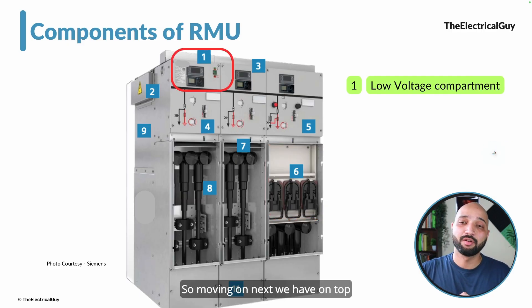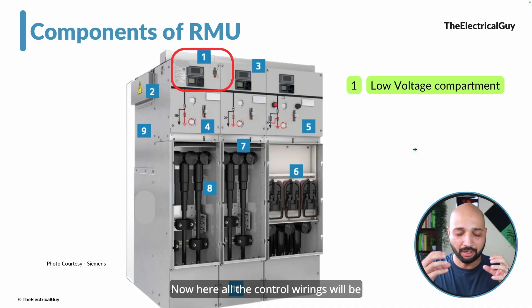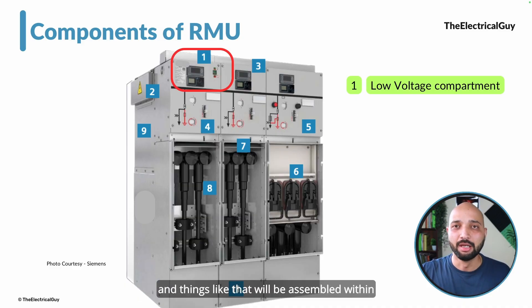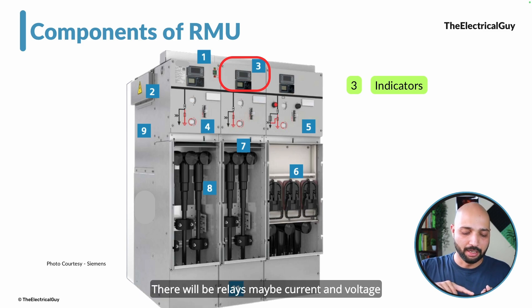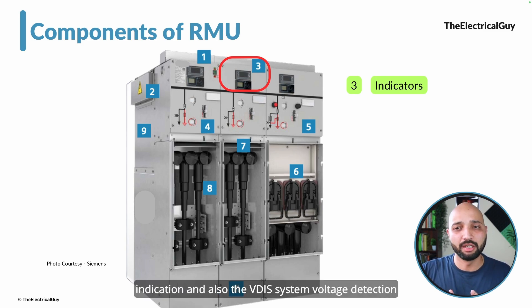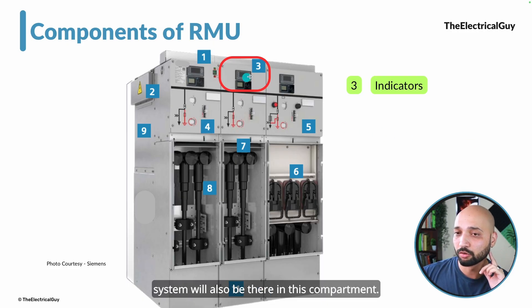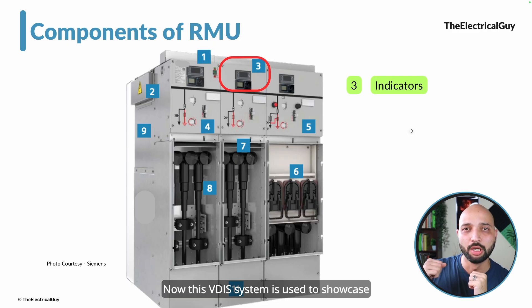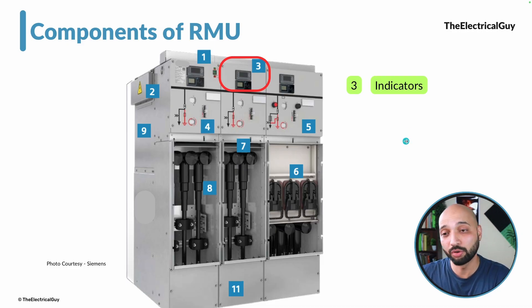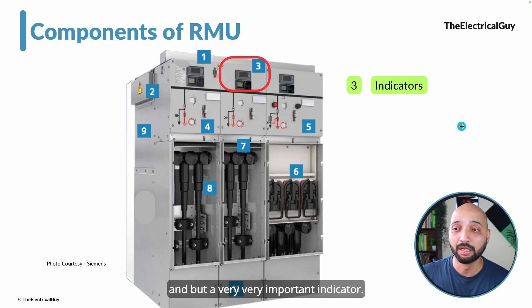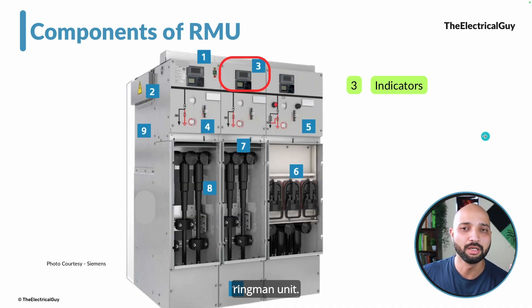Moving on next, on top you can see the low voltage compartment. Here all the control wiring will be present, along with low voltage components like indicators assembled within this top section. Inside there will be different indicators — earth fault indicators, relays, maybe current and voltage indication, and also the VDIS (Voltage Detection Indication System) will also be there. The VDIS system is used to show whether there is voltage in the system. If it shows yes, there is voltage, then carrying out maintenance on the switchgear is not a good idea. It is a very important safety indicator, and all such indicator parts are assembled in the low voltage compartment.